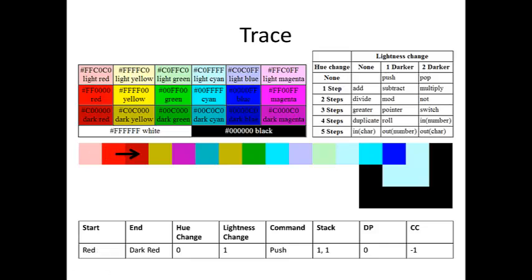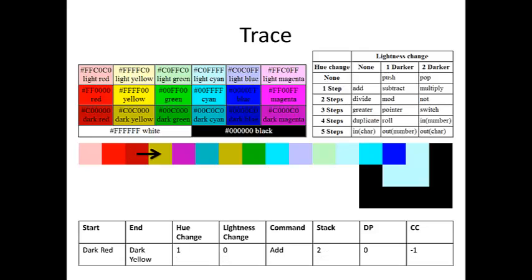Now we are going from red to dark red, so the number one is pushed onto the stack. Hence, the stack now contains one, one. The two ones that were on the stack were popped off, added, then the result was pushed back onto the stack. Now the stack has a value of two. The top value of the stack, which was two, was copied and pushed onto the stack — thus the stack now reads two, two. The top value was duplicated again; the stack now reads two, two, two.